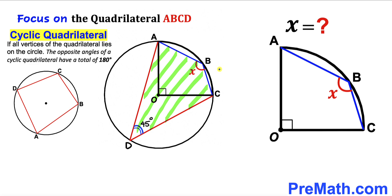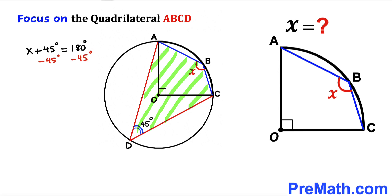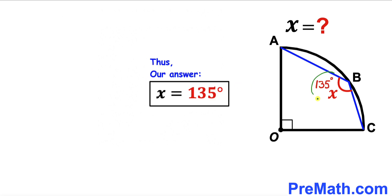Since all vertices A, B, C, and D lie on the same circle, ABCD is indeed a cyclic quadrilateral. Therefore the sum of the two opposite angles must equal 180 degrees. We can write: angle X plus 45 degrees equals 180 degrees. Subtracting 45 degrees from both sides, our angle X turns out to be 135 degrees. That is our final answer for the first problem.